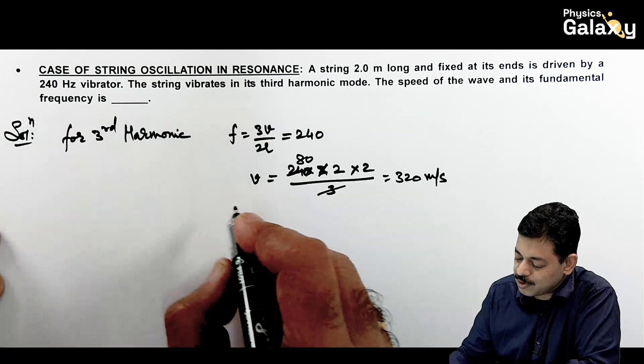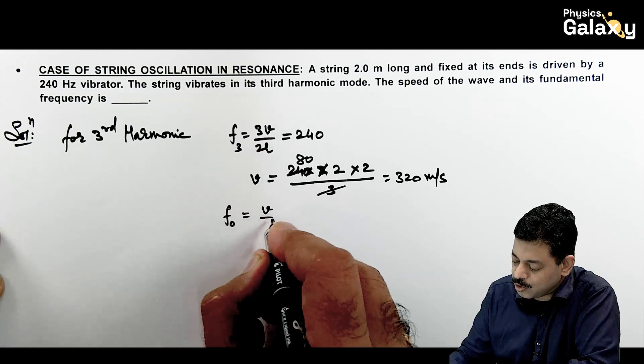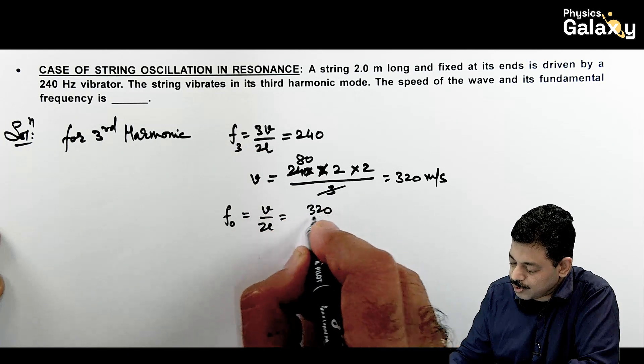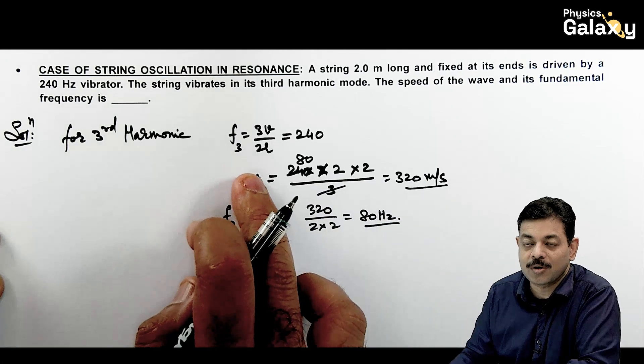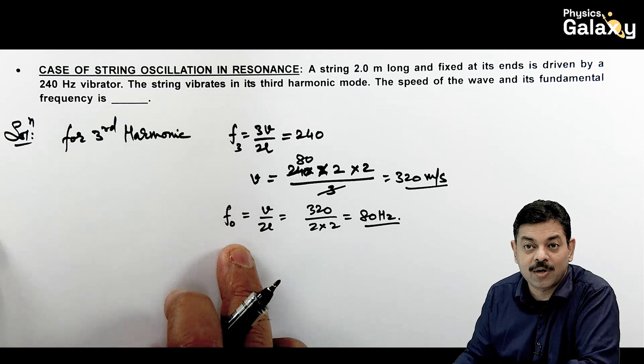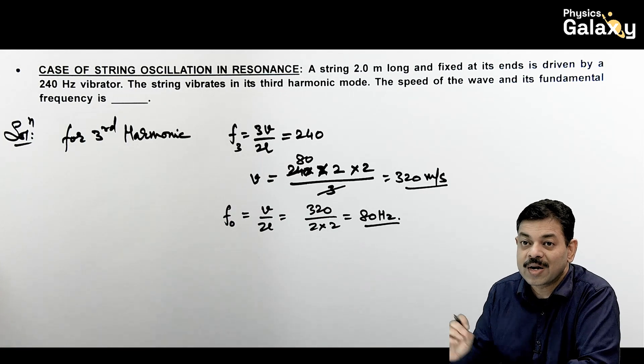Once you get the wave speed it is asking the fundamental frequency. Fundamental frequency f0, this is f3, this is V by 2L. So this 320 divided by 2 into 2 comes out to be 80 hertz. Straightforward aap result nikal sakte hain but aapko basic points dimag mein feed karke rakhne hain. Directly formula based hi zyada tar questions hote hain.